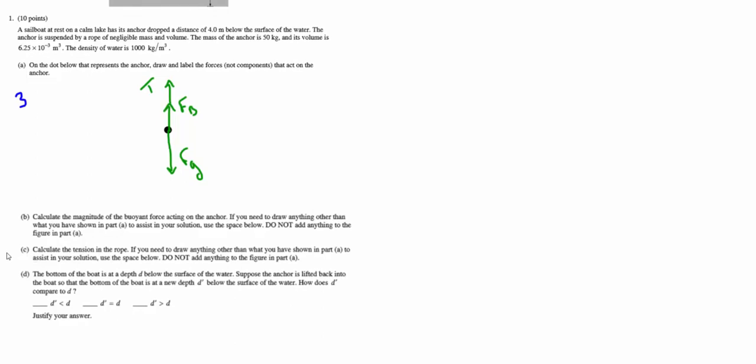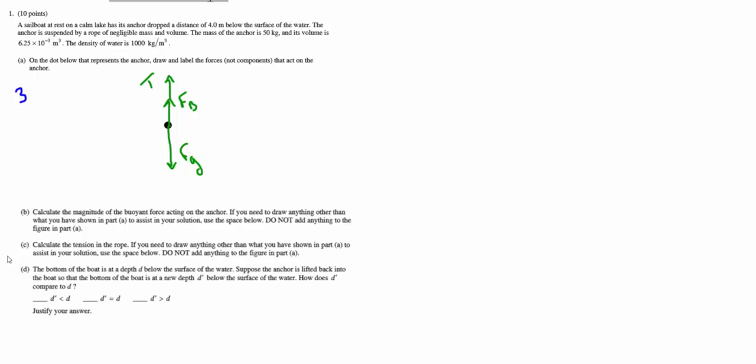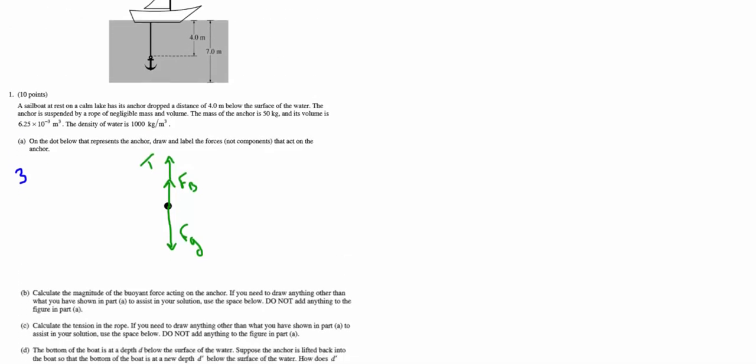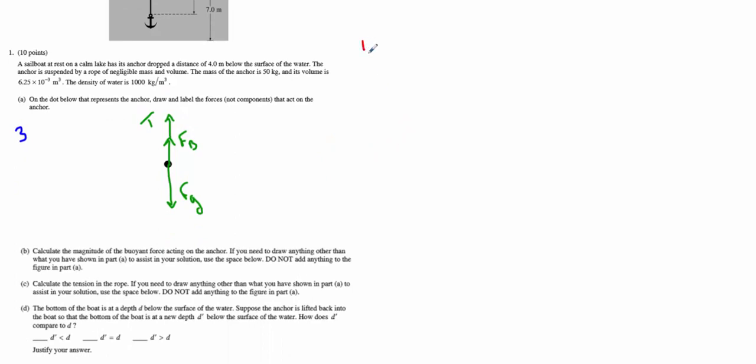Part B: we want to know the magnitude of the buoyant force acting on the anchor. Don't draw anything on that diagram—lock it in. The anchor is fully submerged underwater, so we can use the buoyant force equation: ρVg. Rho is the density of the fluid, in this case water. The volume is the displacement of the water, which is also the volume of the anchor since it's completely submerged. g is the acceleration due to gravity.